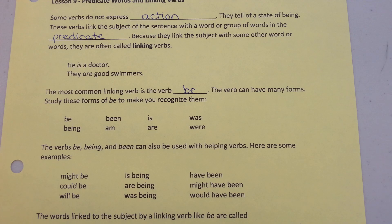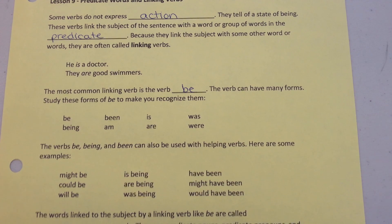The forms of "be" are: be, being, been, am, is, are, was, were.